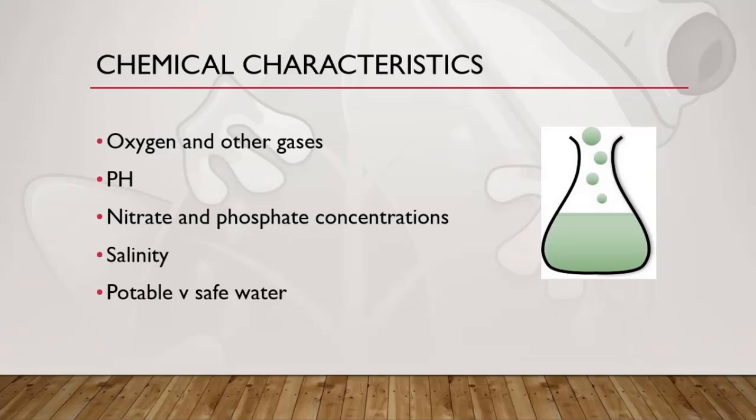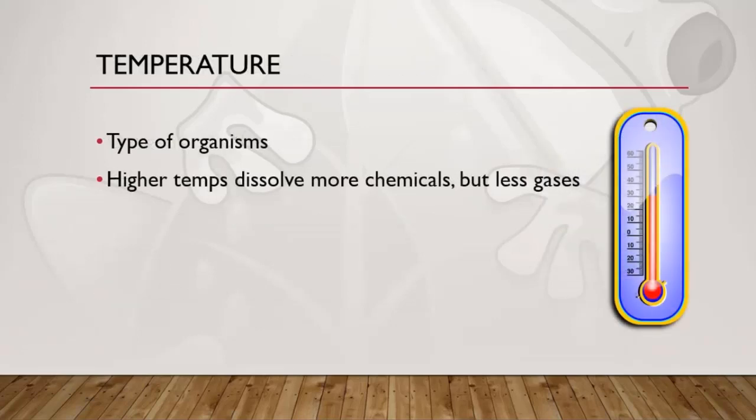So how do these physical and chemical parameters affect our freshwater? First, the temperature of the water determines the type of organisms that can live in it. Warm water dissolves more chemicals but dissolves less gas. Gases are less soluble in warmer temperatures, whereas solids tend to become more soluble as temperature increases. So gases like oxygen and carbon dioxide will become less soluble in water as the temperature increases, affecting the organisms that live there.